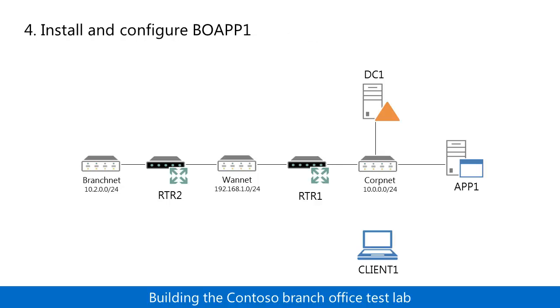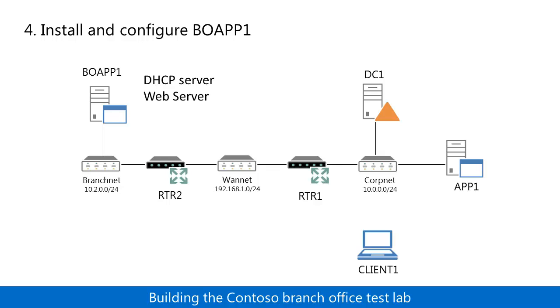In step four, you add the computer named BOApp1 and join it to the corp.contoso.com domain. You then configure it as a DHCP server for the Branchnet subnet, as a web server, and as a file server.